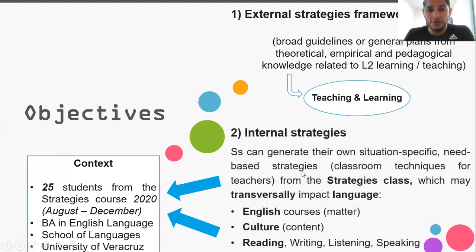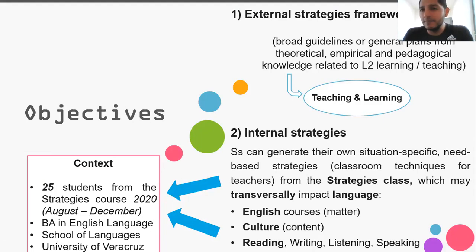The context of this research is the University of Veracruzana. I work with 25 students from the learning strategies course, which is a learning experience taken in the first term of the BA in English language at the School of Languages. It was carried out from August to December 2020. I propose the external strategies framework that emerged from the analysis of data, which has to do with the relationship between teaching techniques and learning procedures. External strategies framework are guidelines that include theoretical, empirical, and pedagogical knowledge related to L2 learning.